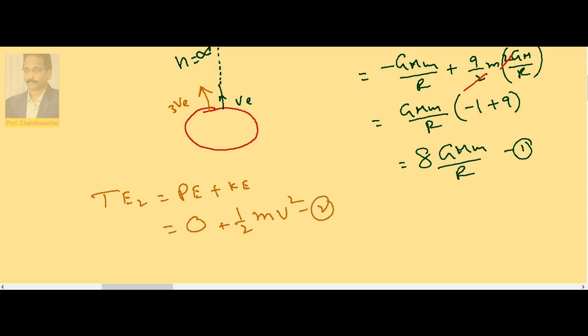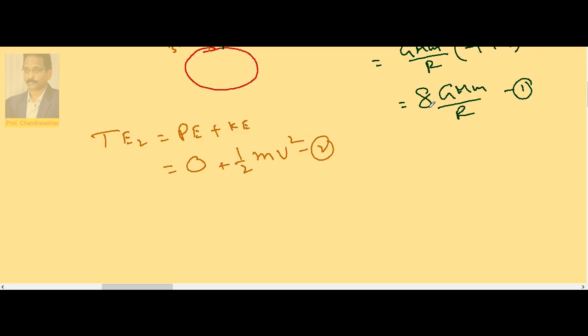So equating them: (1/2)mv² = 8GMm/R. Both sides I can cancel m, so remaining v² = 16GM/R.